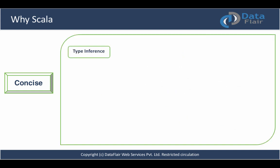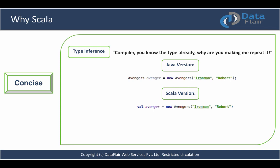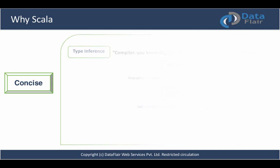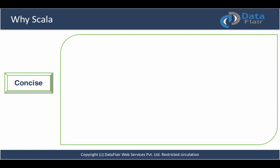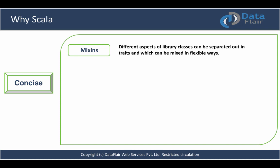Scala's type inference is also a contributor to its conciseness. We don't have to repeat type information again and again and thus it can be left out. For example, when we are creating an instance of Avengers with two parameters, it's understood that the type is going to be Avengers and hence it can be left out in Scala. The same can be done for other primitive types such as integer, float, or other classes. In Java you have to explicitly write the type again and again, which is not ideal. Different aspects of reusability — classes can be separated out into traits and then mixed in flexible ways, and we call it mixins in Scala, which makes development easier.